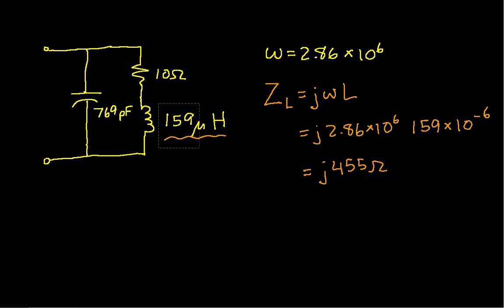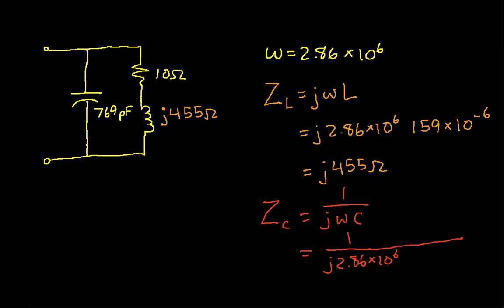So let's replace the inductance by the impedance that we just computed. Let's compute the impedance of the capacitor. That's 1 over j omega C, which is 1 over j, omega is 2.86 times 10 to the 6th, C in this case is 769 times 10 to the minus 12th. And when I do these computations, I get minus j times 455 ohms. So let's replace the capacitance by the impedance that we just computed.